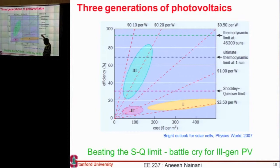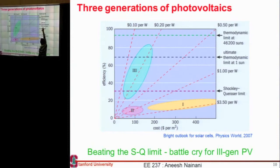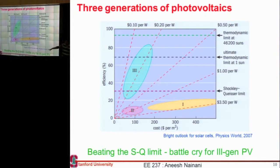Plotted here is this limit called the Shockley-Queisser limit, which gives around 32% efficiency at one-sun concentration. Everybody wants to exceed that limit. There are also thermodynamic limits. Finding what efficiency range we are allowed and figuring out ways to exceed that limit has become very important. But first we need to understand where the Shockley-Queisser limit comes from.